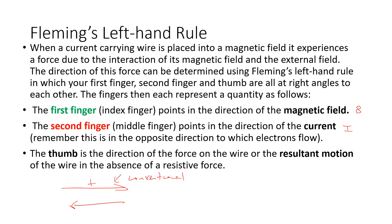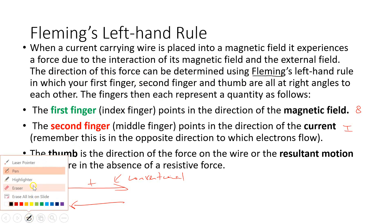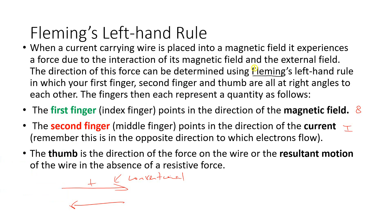So, let's see what the information here is saying. First, it says that when a current-carrying wire is placed in a magnetic field, it experiences a force due to the interaction of its magnetic field and the external field. The direction of this force can be determined using what we call Fleming's left-hand rule.